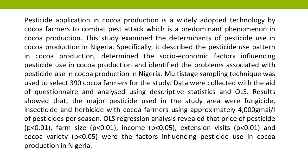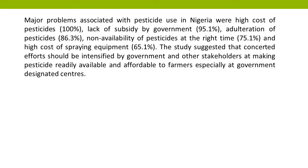Price of pesticide (p<0.01), farm size (p<0.01), income (p<0.05), extension visits (p<0.01), and cocoa variety (p<0.05) were the factors influencing pesticide use in cocoa production in Nigeria.